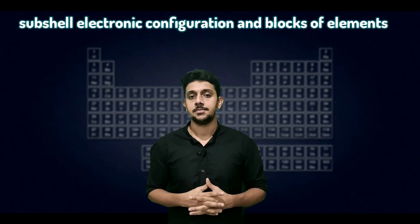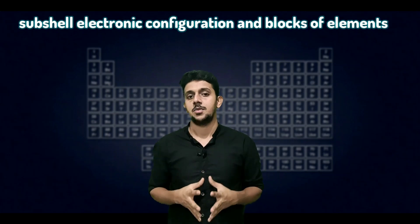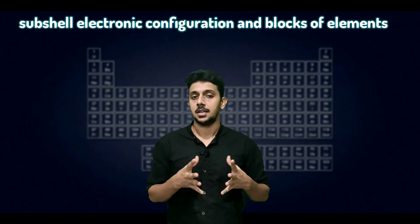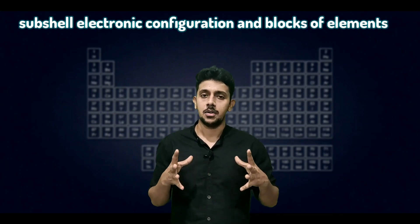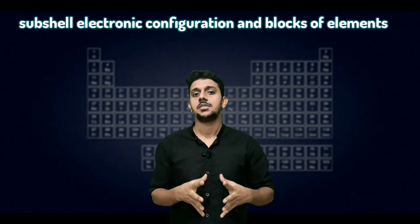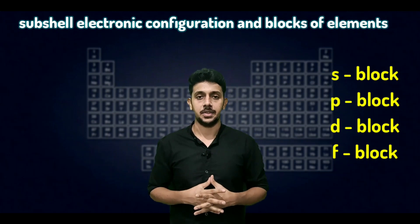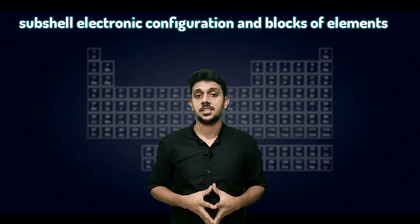Today we are going to a new topic: sub-shell electronic configuration and blocks of elements. Based on the sub-shell electronic configuration, our 118 elements are categorized into four different blocks. Let's see how these elements are categorized into different blocks based on the sub-shell electronic configuration.